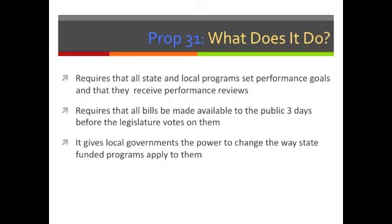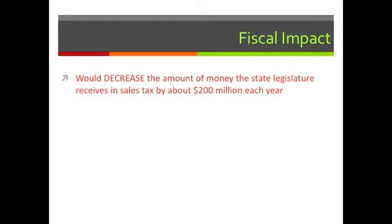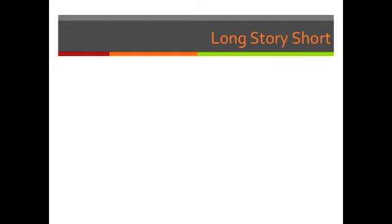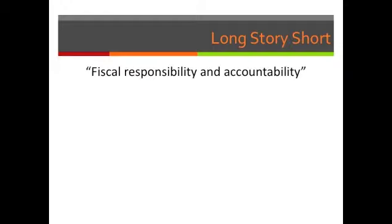The state government can still veto any changes local governments make. Regarding fiscal impact, this proposition is estimated to decrease state sales tax revenue by about 200 million dollars per year but increases funding certain local governments would receive. Prop 31 will also cost a little more in compliance for both state and local governments as they gear up for new paperwork and goal-setting procedures, though these extra expenses would moderate over time. The implied theme is fiscal responsibility and accountability.